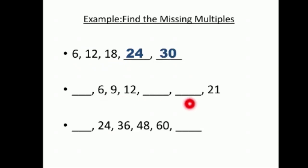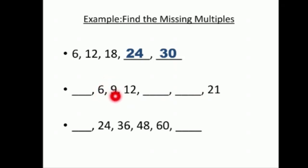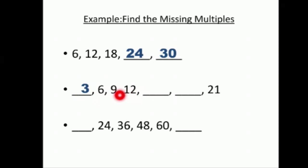هلأ اللي أحنا ما نعرف أي هو، يعني ده أي نمبر؟ عنا six، بعدها صارت nine، معناته قديش زدنا؟ زدنا three. وكمان هون صارت twelve، معنا زدنا three. معناه هذا ملتبل الـ three. طيب قبل الـ six أي ملتبل موجود؟ قبل الـ six عنا three، لأنه هذا ملتبل الـ three، يعني أنا بدي أنقص three إذا بدي أمشي هيك.